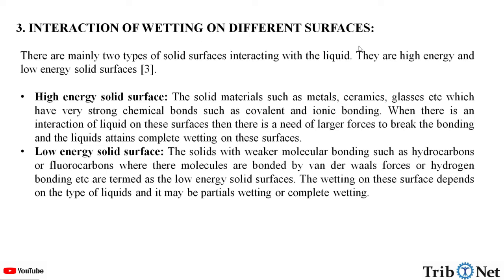How does wetting interact with different surfaces? There are mainly two types of solid surfaces interacting with a liquid: high energy and low energy solid surfaces. High energy solid surfaces: solid materials such as metals, ceramics, and glasses, which have very strong chemical bonds such as covalent and ionic bonding, require larger forces to break the bonding when a liquid interacts with these surfaces, and the liquid attains complete wetting on these surfaces.